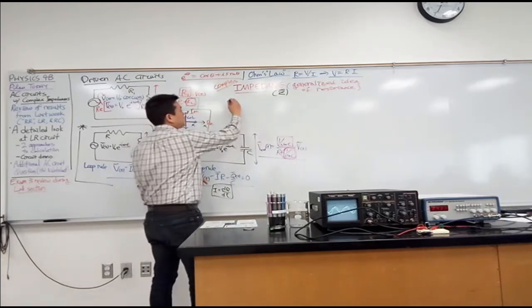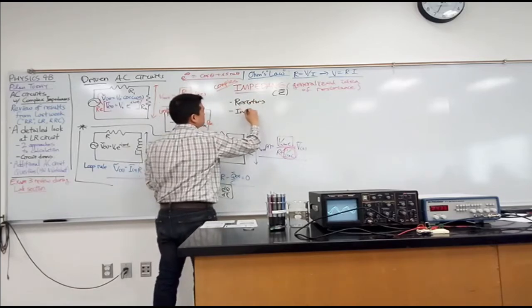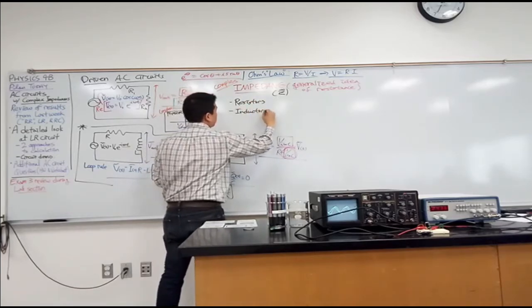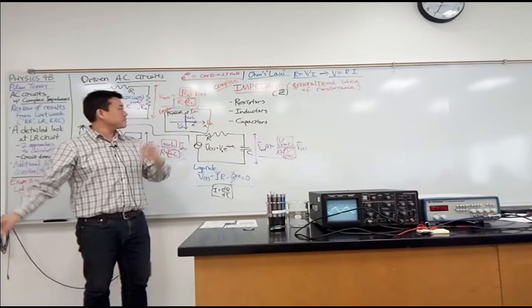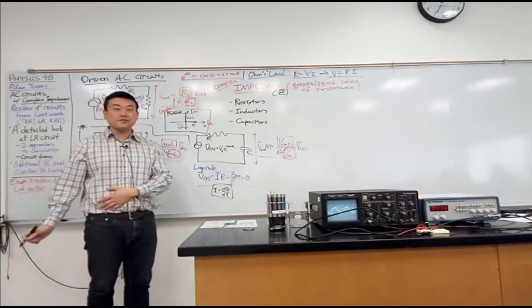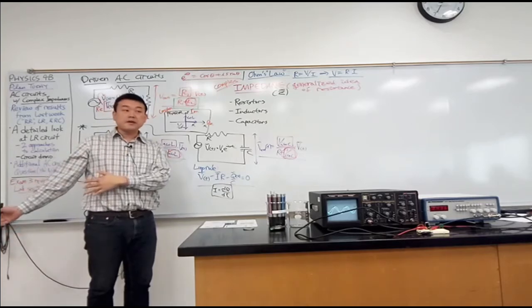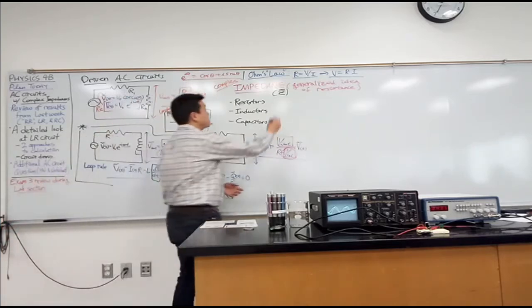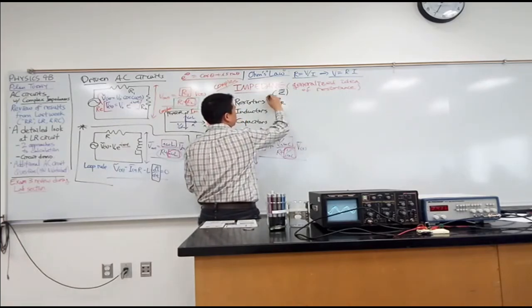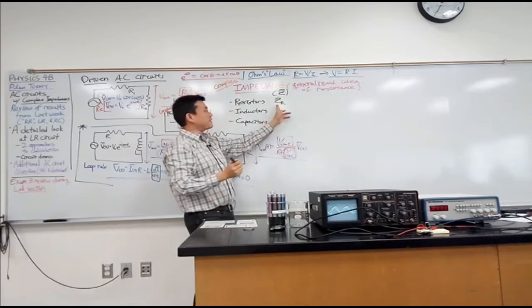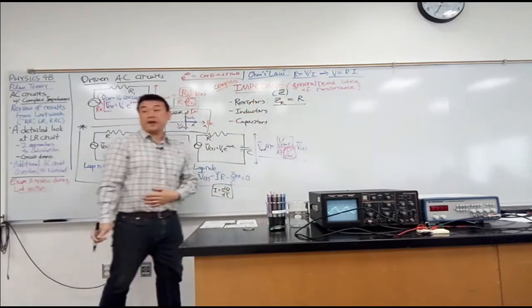So, impedances can be used to describe resistors, inductors, and capacitors. So, with the resistors, talking about impedance of resistor, well, it's just resistance. It's just the old idea of resistance is folded in as a special case of an impedance. So, impedance of a resistor, this time I'm going to write down squiggly line because it's a real number. That's simply the resistance. So, nothing new there.